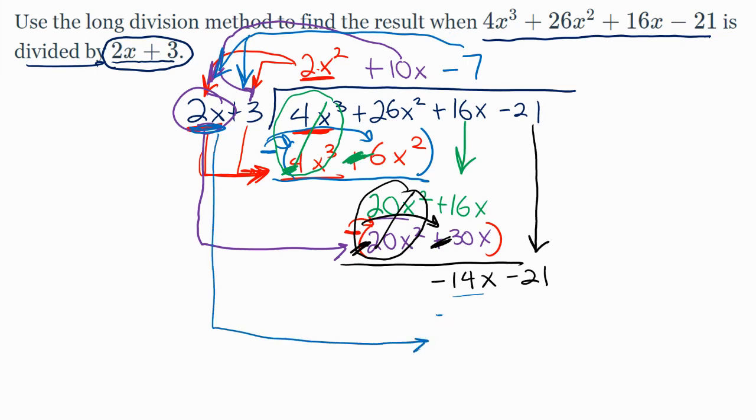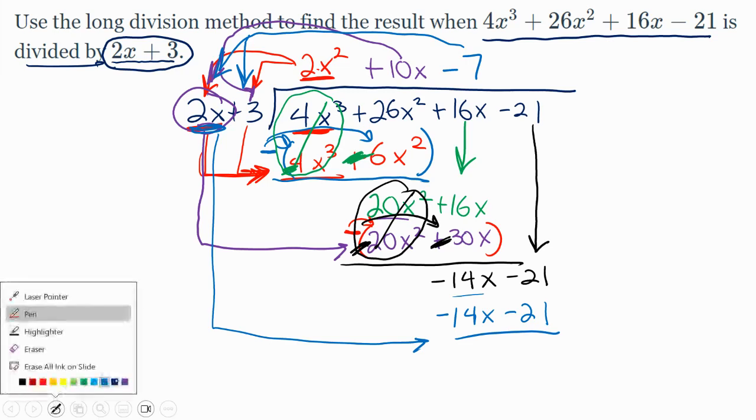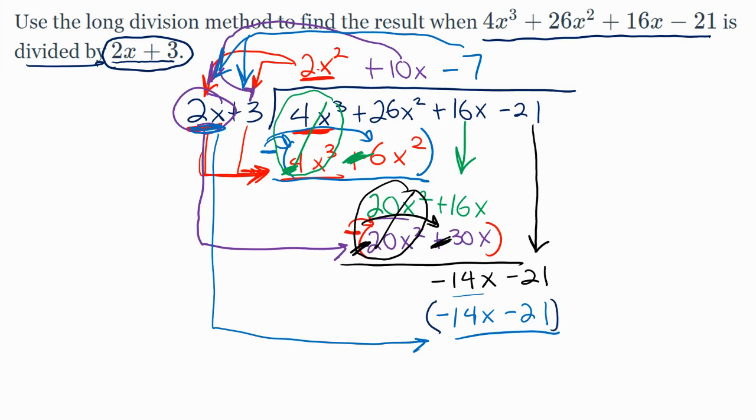And that should give me a negative 14x and a negative 21. Now these values are exactly the same, and that's what we want if we're hoping for it to be a factor because the last step is you subtract. And when you subtract, these signs will change, so this will be a positive 14 and a positive 21.